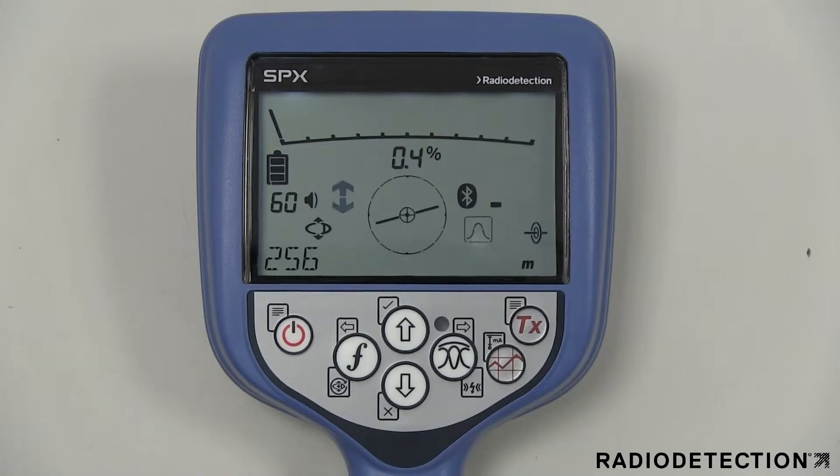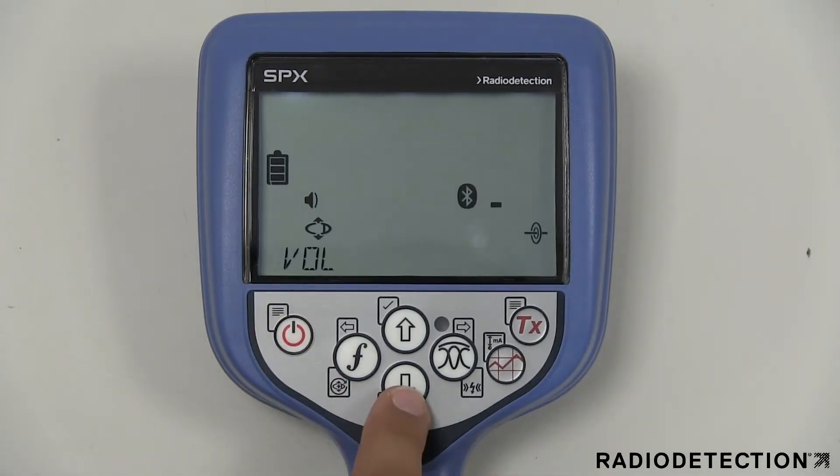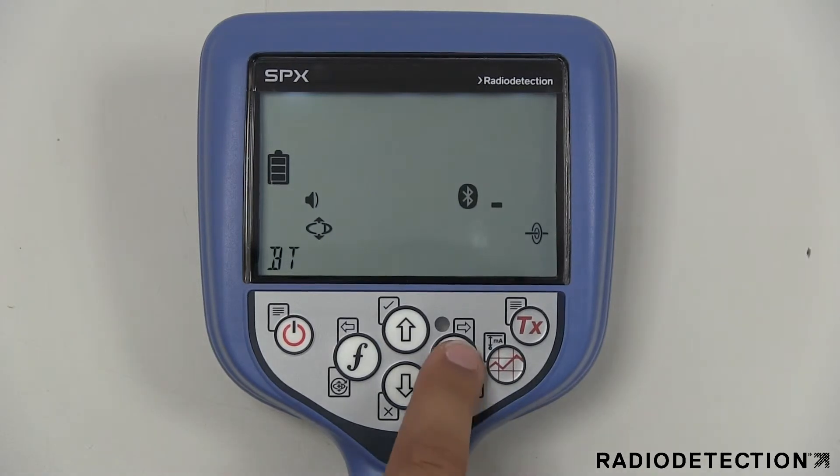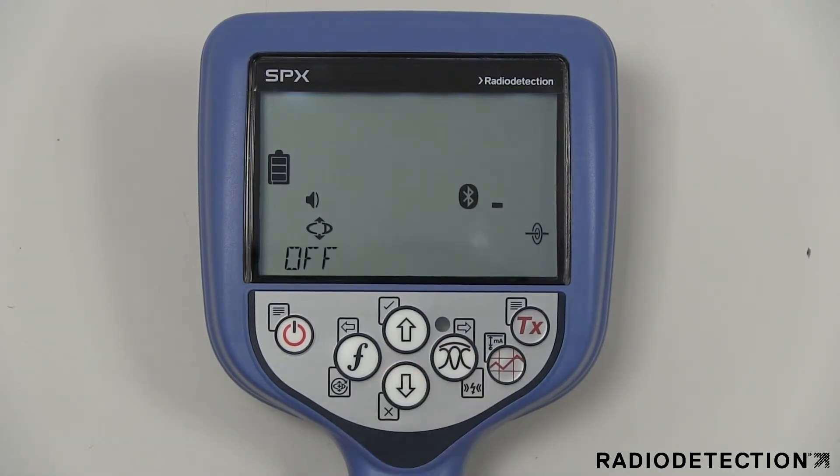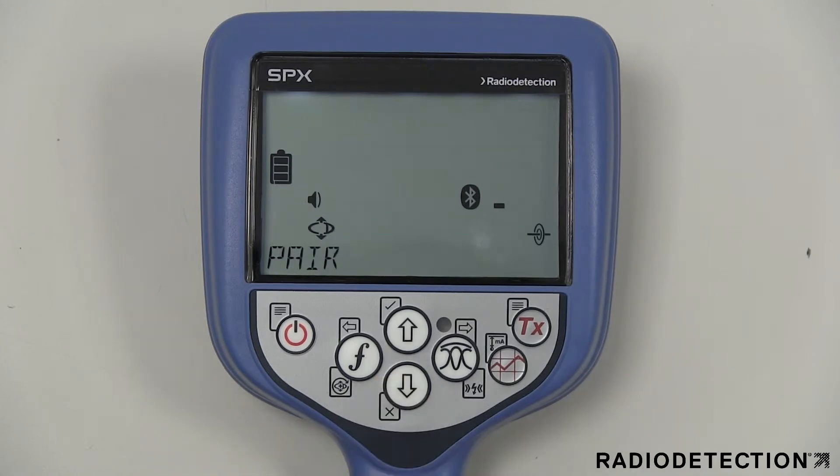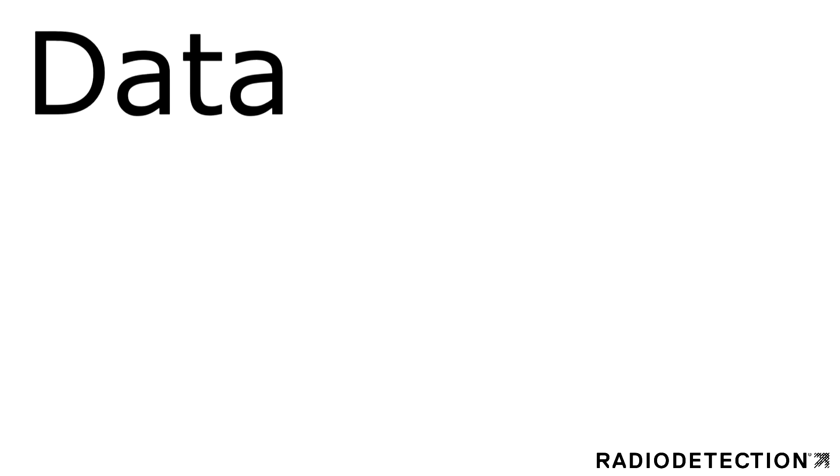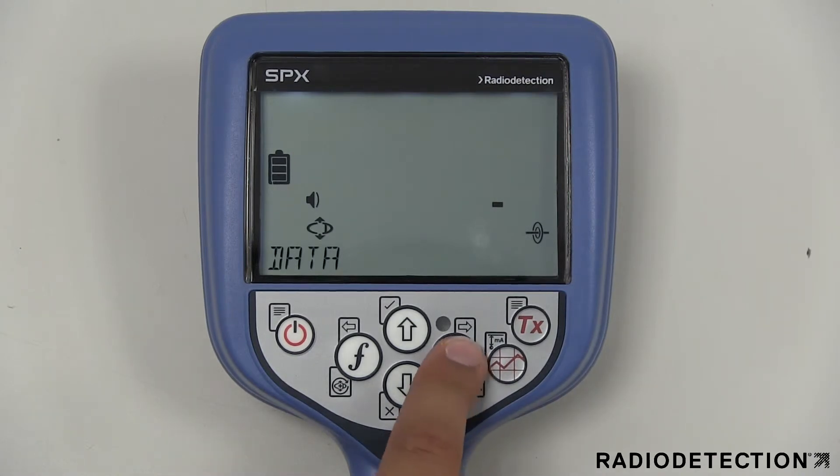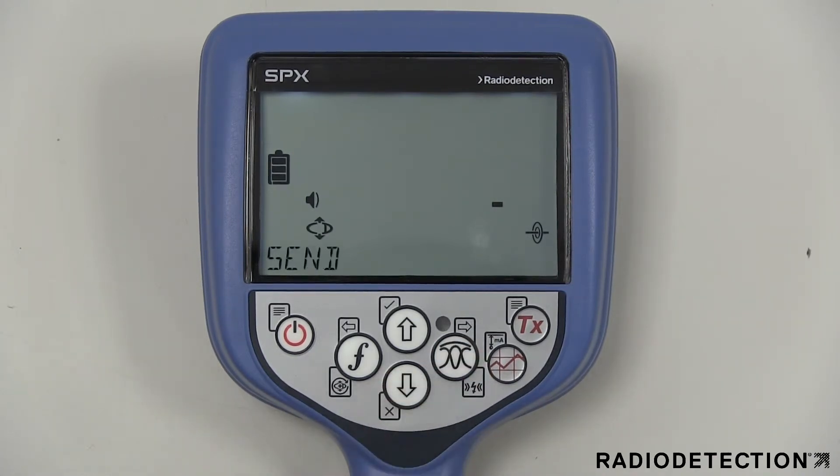The BT menu option allows you to manage the Bluetooth connection between the locator and the TX transmitter and other devices such as PDAs. The protocol option allows you to tell the locator what format the data should be sent in to the external device. The reset option can be used to forget all connections on the device. The pair submenu has two options allowing you to connect to a TX transmitter or an external device. The data menu option allows you to delete or send saved survey measurement data to a connected device via Bluetooth connection. The exit option can be used to disable the communication channel.